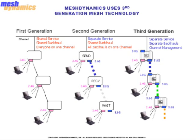Third generation mesh technology offers a substantial improvement from first and second generation technologies. Not only do the client and backhaul functions work on different frequencies, each node is equipped with two radios to handle backhaul functionality. Each of these radios transmit within the network on a different channel, introducing the phrase multi-channel backhaul. Since each backhaul link is on a different channel, there is no longer interference when two backhaul links within the network are active at the same time. Therefore, each node is free to transmit and receive simultaneously, and the bandwidth transferred over multiple hops increases dramatically.